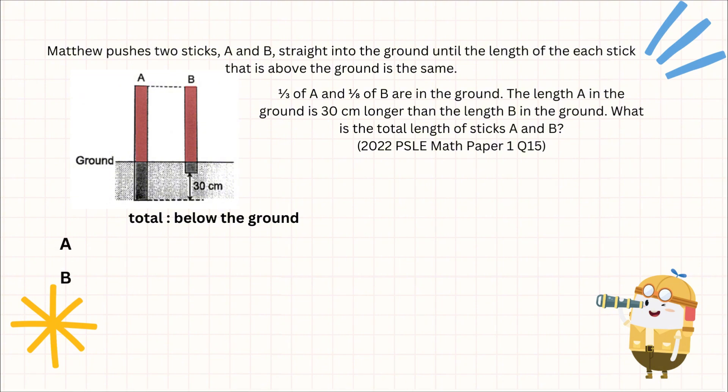For A, there are three parts total with one part below the ground. We have eight parts for B, where one part is also below the ground. We notice that if we find their difference, the difference is 2 for A and the difference is 7 for B.